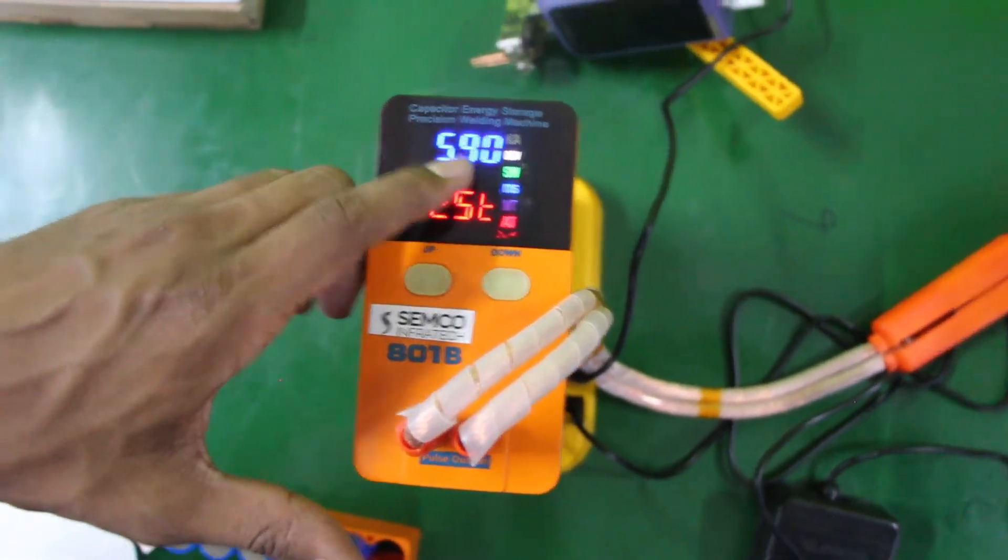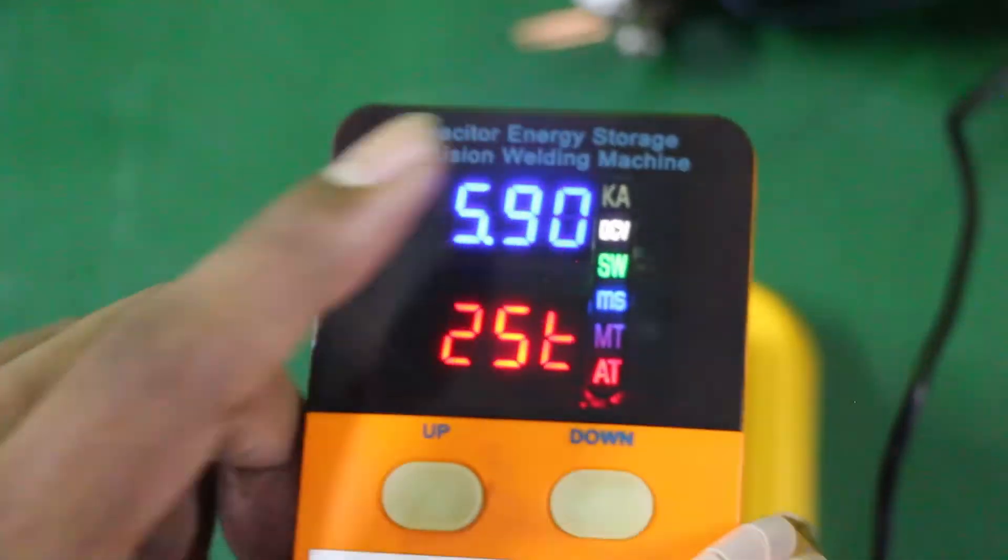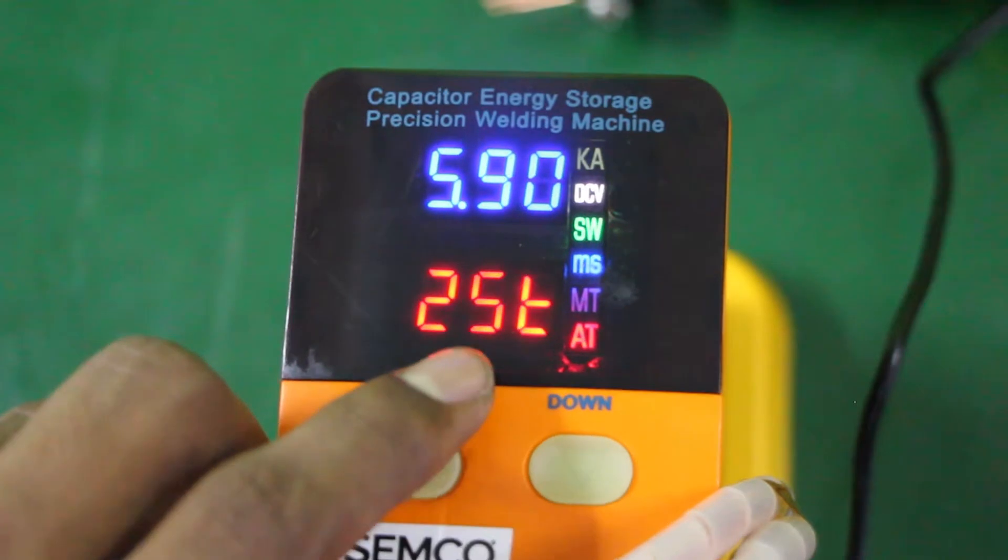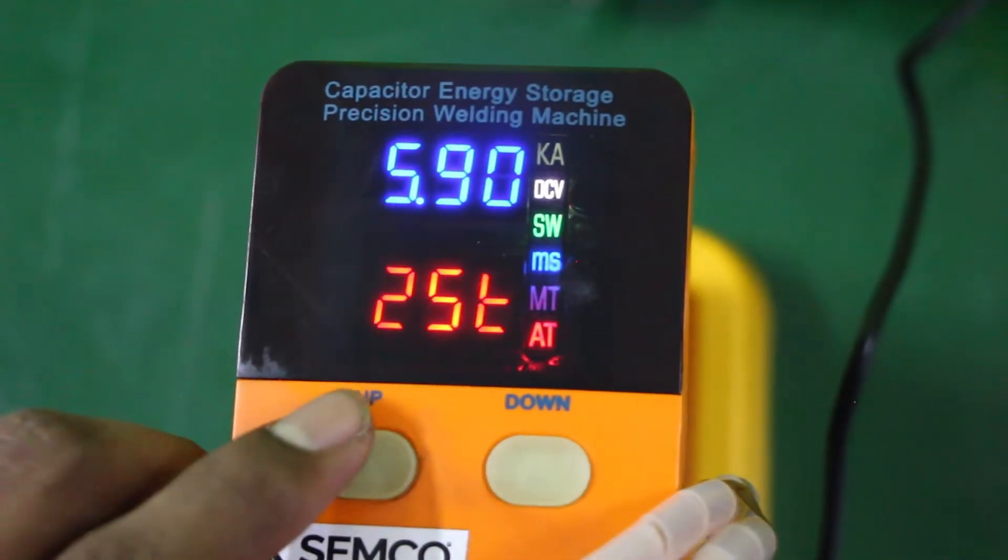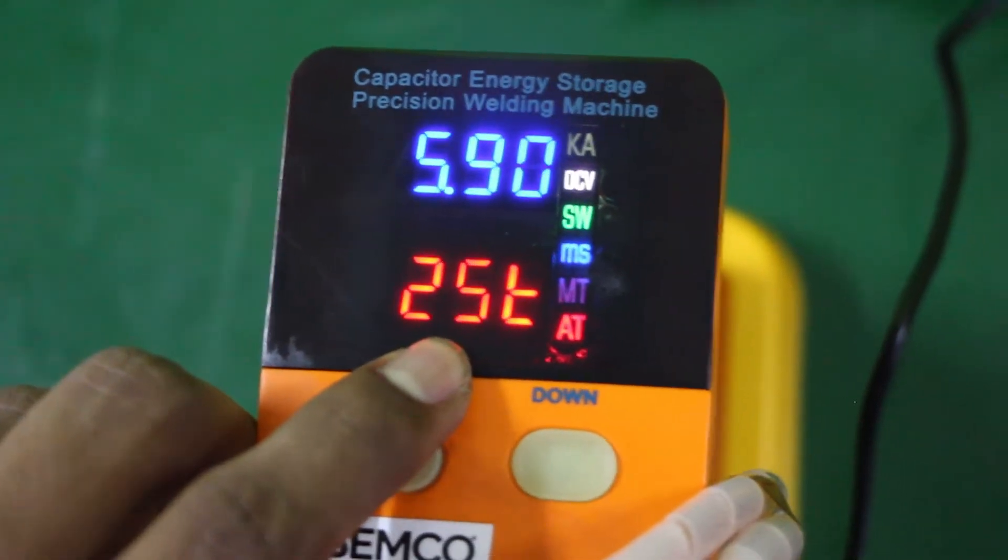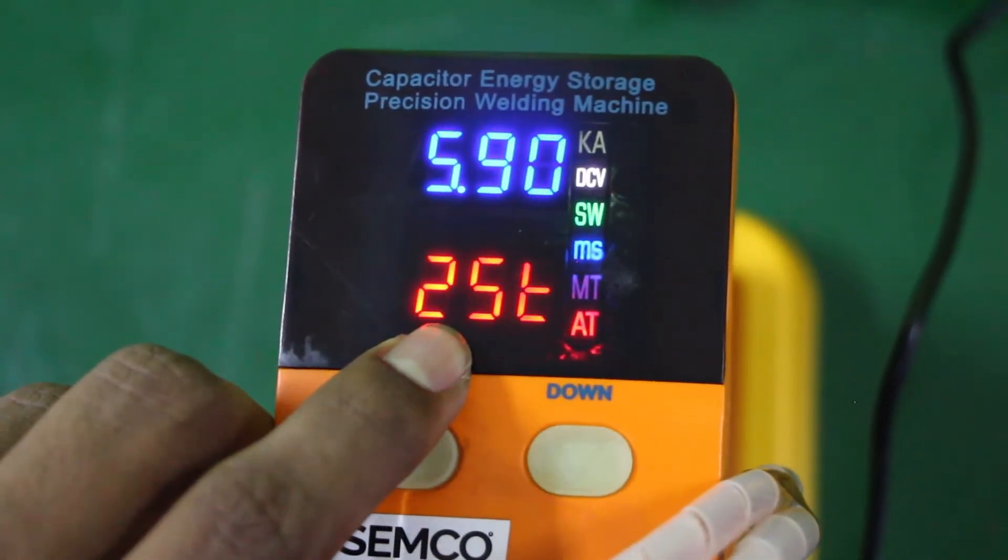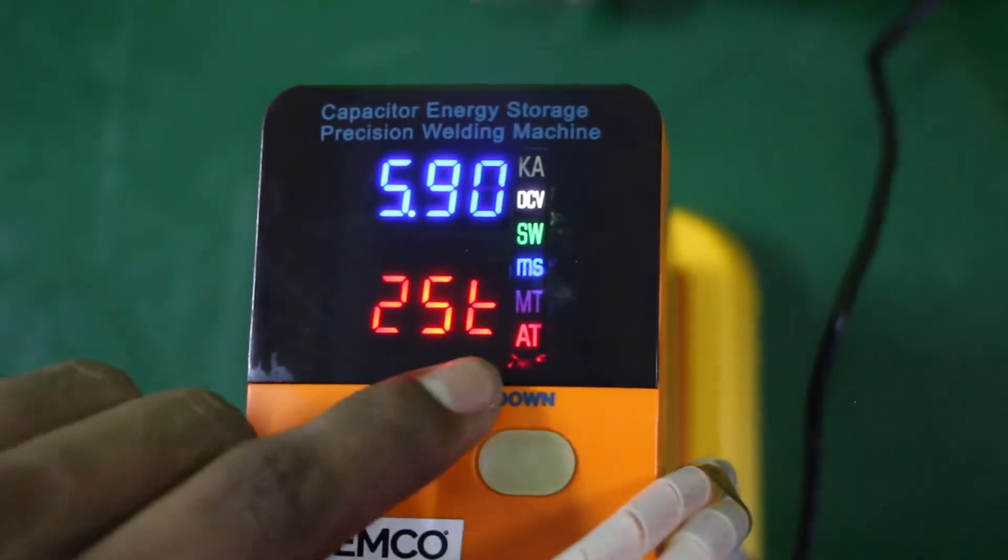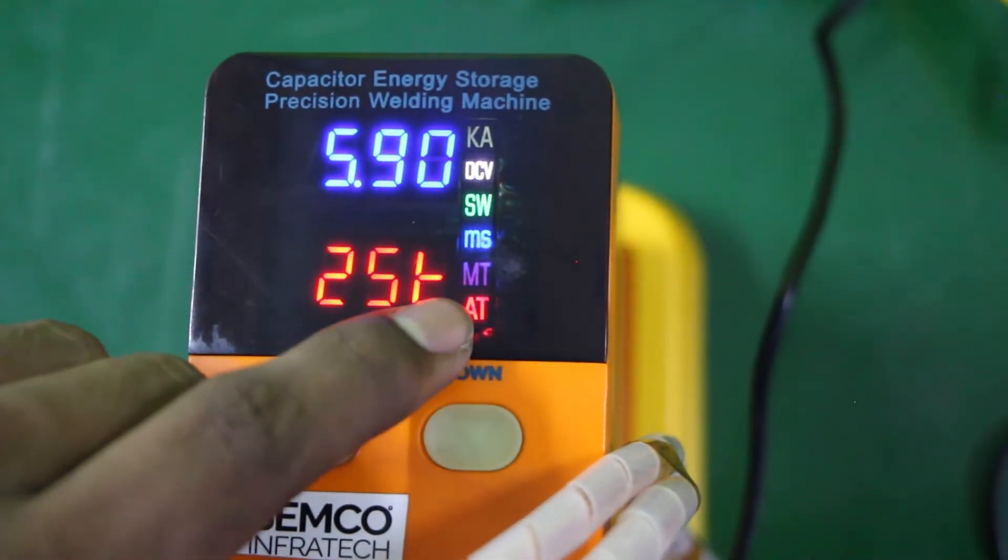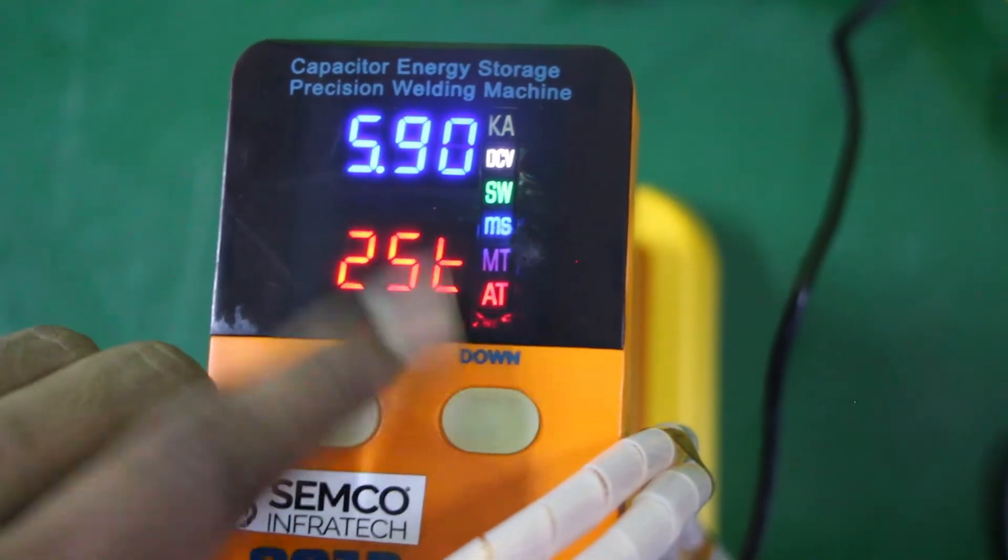Here you can see the voltage is 5.9V, and this is the time for the welding speed - 25 milliseconds for manual spot welding. This machine can operate in both automatic and manual mode.